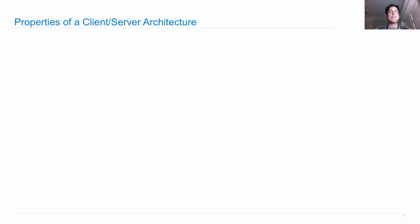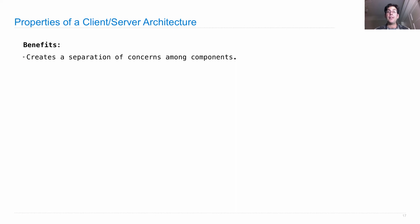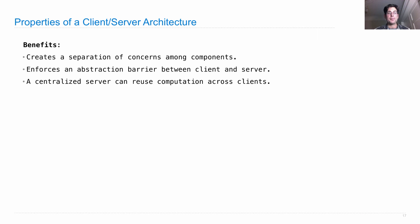To wrap up the discussion of client-server architectures, there are some benefits. It creates a separation of concerns among the components — the implementation of the client and the implementation of the server can change while still not disrupting the whole distributed application, because there's an abstraction barrier between them. A centralized server is also useful because it can reuse computation across lots of clients. For example, if generating today's paper involves deciding how to lay out articles on the New York Times, the centralized server can do that layout once and send that same result to many readers.